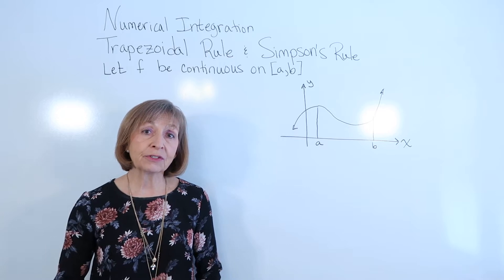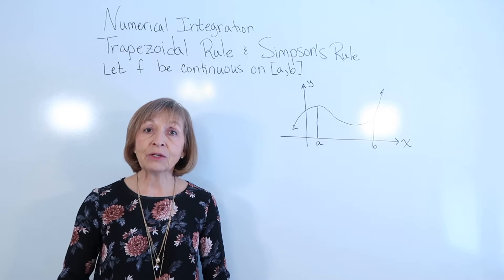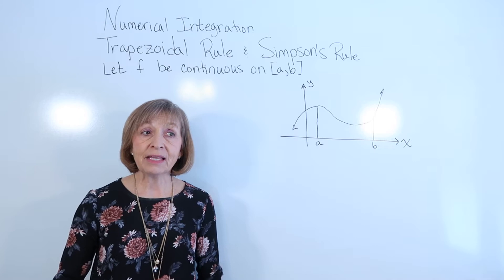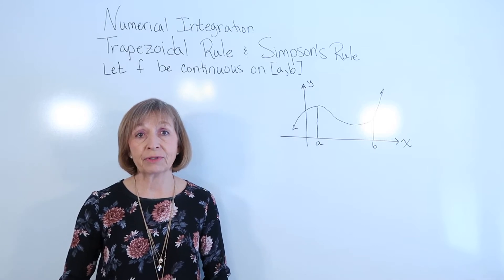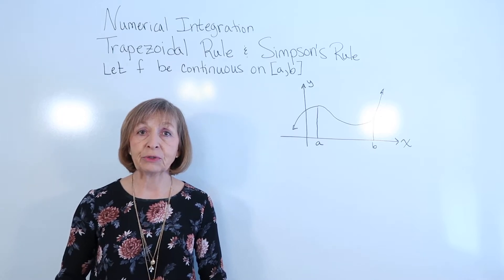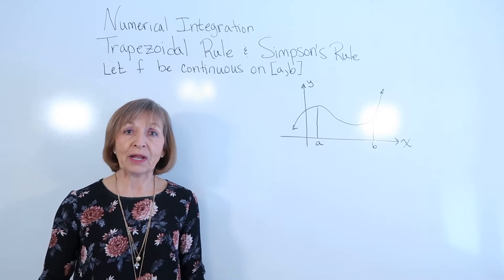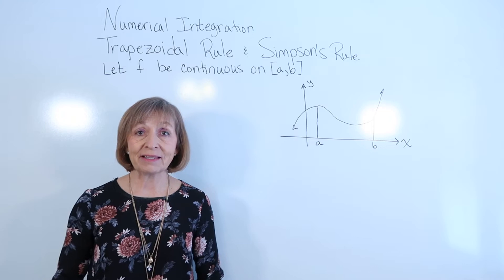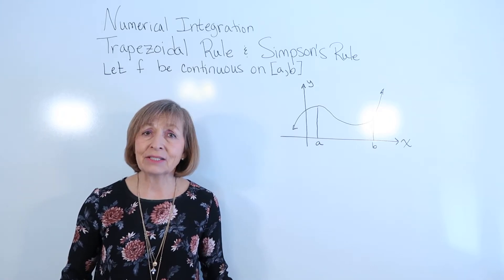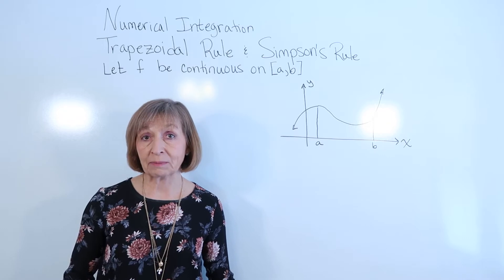With the fundamental theorem of calculus, we needed to find an anti-derivative of our integrand to evaluate it at the upper limit minus the lower limit of integration. That's all well and good as long as you can find your anti-derivative, but what if you have a continuous function over a closed interval and you want to find the definite integral of that function, but you don't have an anti-derivative for it, nor does it lend itself to summation replacements? In those cases, if we can't find the exact value, at least we can approximate it.